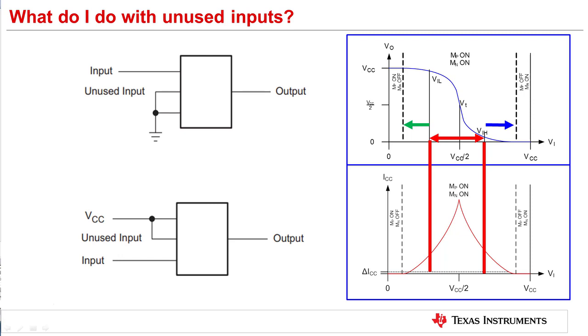What is the easiest solution to this? We can tie the inputs to a known voltage, either ground or the supply rail and maintain the ICC current to acceptable low value.